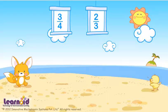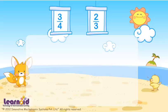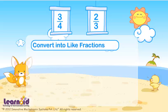Let's check one more example. Compare 3 by 4 and 2 by 3. To convert into like fractions, take LCM of denominators. LCM of denominators 4 and 3 is 12.